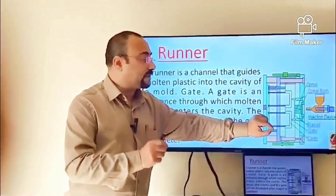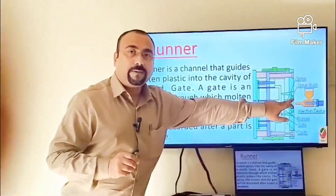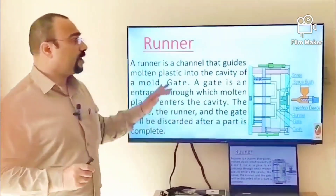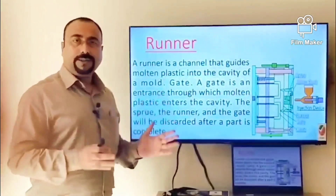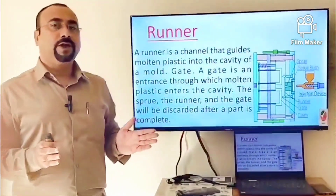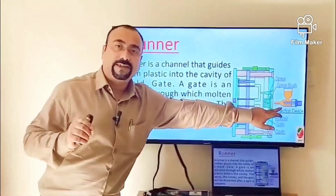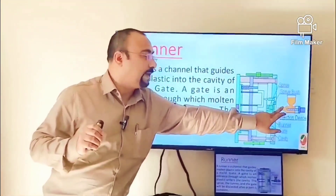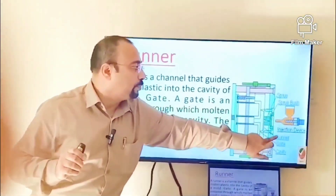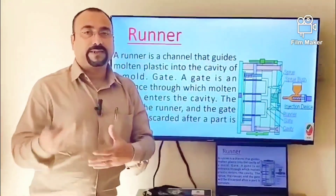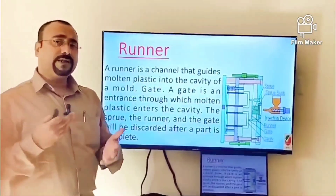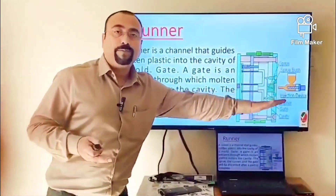Where the runner starts, we call it the sprue, and the branching portions are called sprue bush. So in a conventional cold runner system, the plastic that comes out from the injection barrel and enters into the cavity — passing through the sprue, sprue bush, and runner — this material is either discarded, thrown out, or recycled.